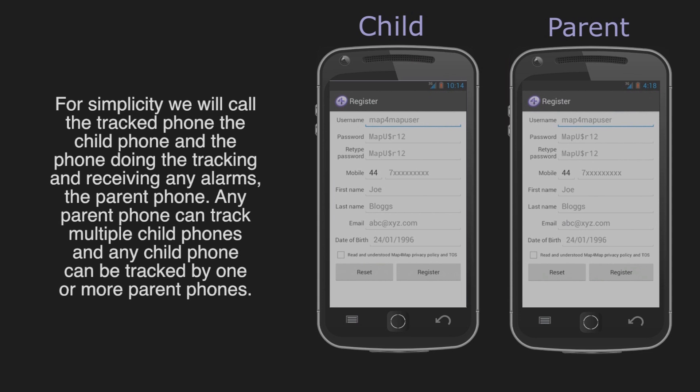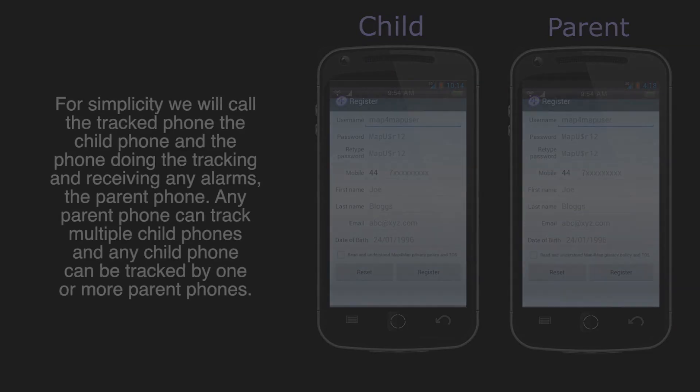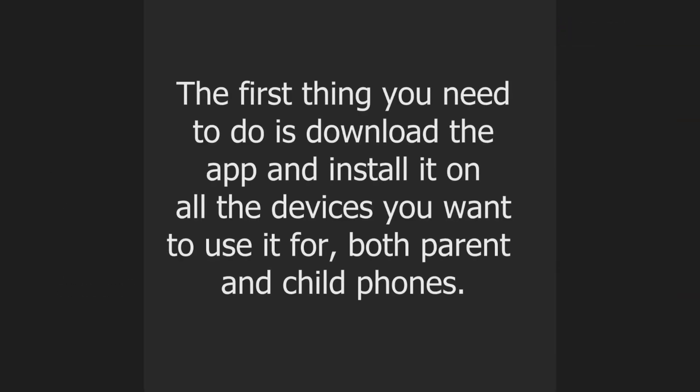Any parent phone can track multiple child phones, and any child phone can be tracked by one or more parent phones. The first thing you need to do is download the app and install it on all the devices you want to use it for, both parent and child phone.